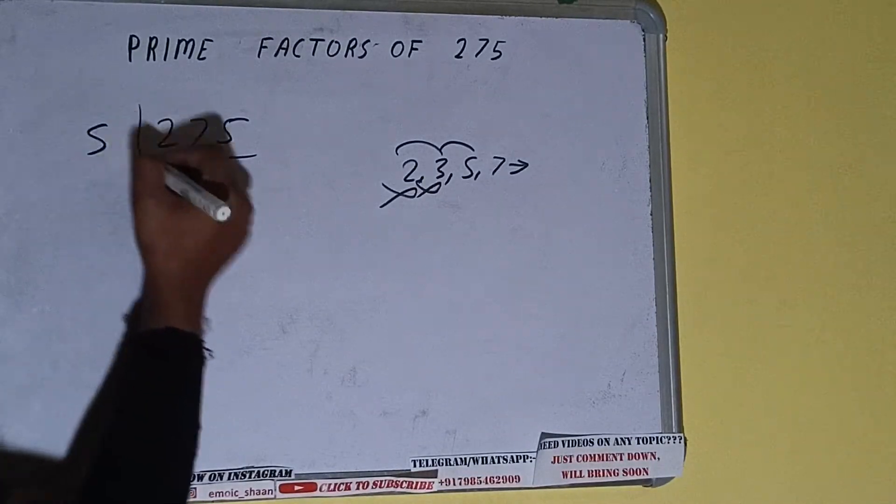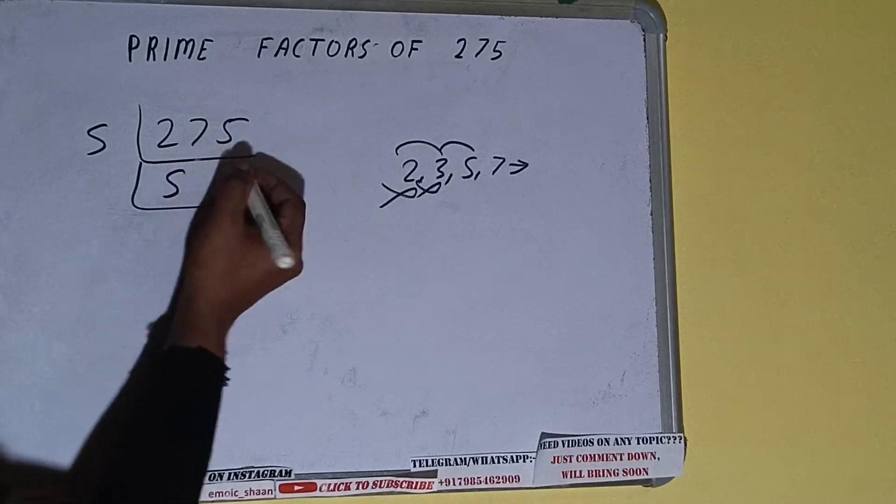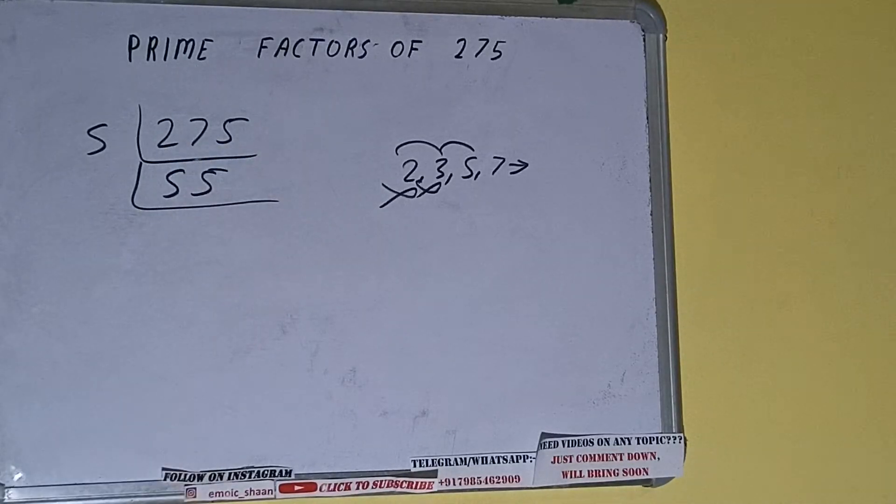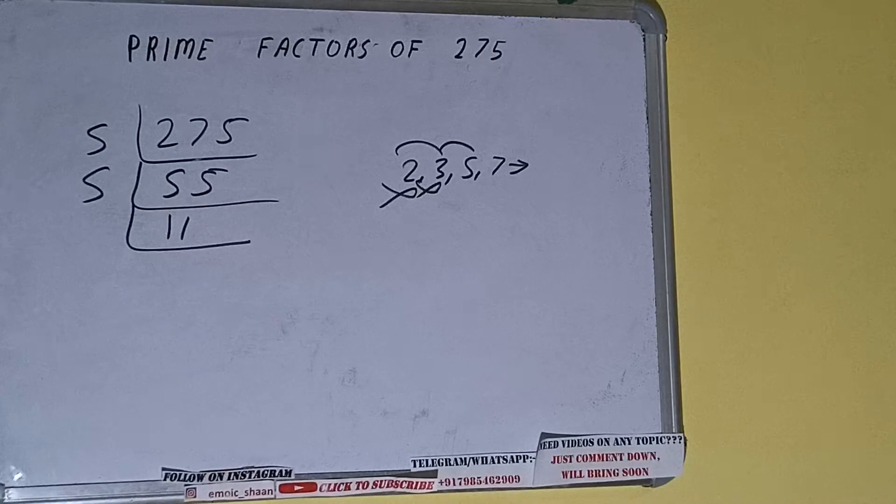So divide it and we'll be having five fives are 25, two fives, five fives are 25. We'll be having 55, which is again divisible by 5, and we'll be having 11.